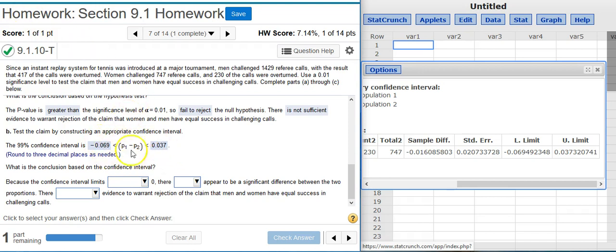Because zero is inside the confidence interval, that means that the two proportions that we're comparing could be the same. If the difference between these two proportions is zero, that means they're equal to each other, and if they're equal to each other that means they're the same. So because the confidence interval limits include zero, there does not appear to be a significant difference. If they weren't equal then there would be a significant difference, but zero is inside the confidence interval, therefore they could be the same, so if they're the same there's no significant difference between the two proportions.